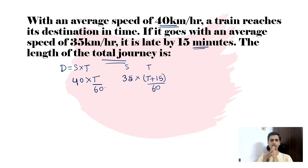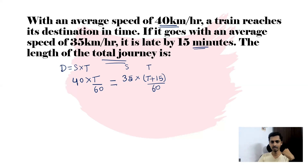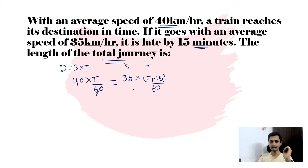Both cases cover the same distance, so we can equate them: 40 × t/60 = 35 × (t + 15)/60. We can cancel 60 from both sides.